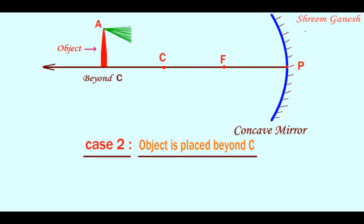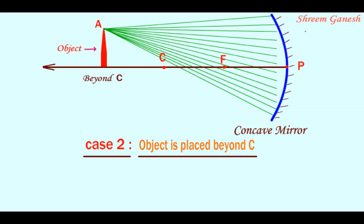There are infinitely many incident rays to the mirror which are passing through A. Out of these infinite incident rays, we shall consider only two incident rays.